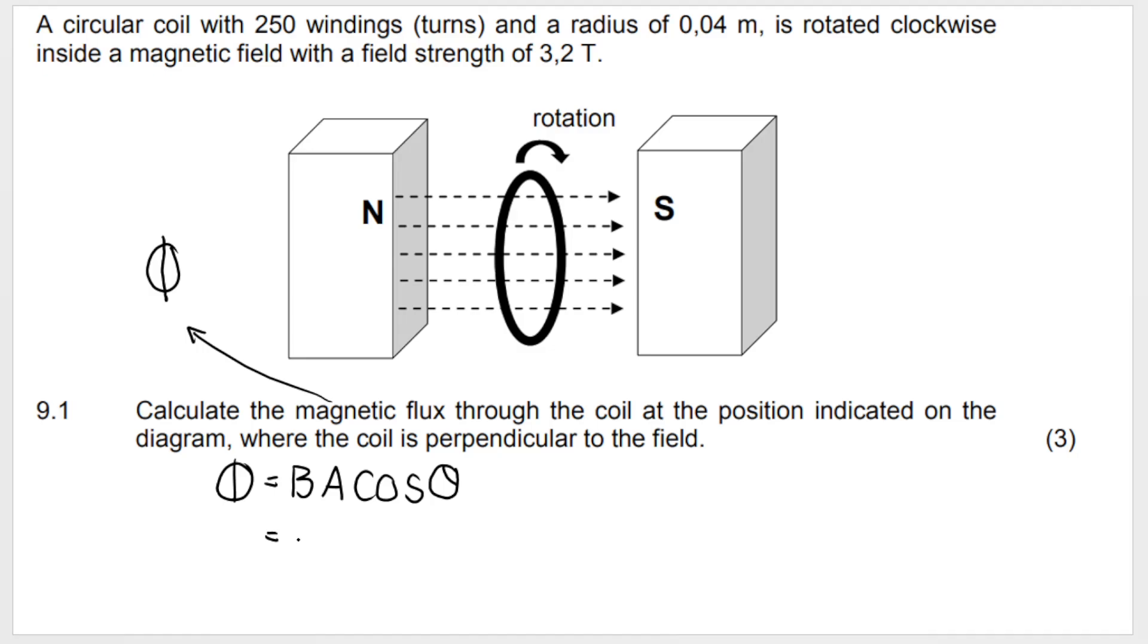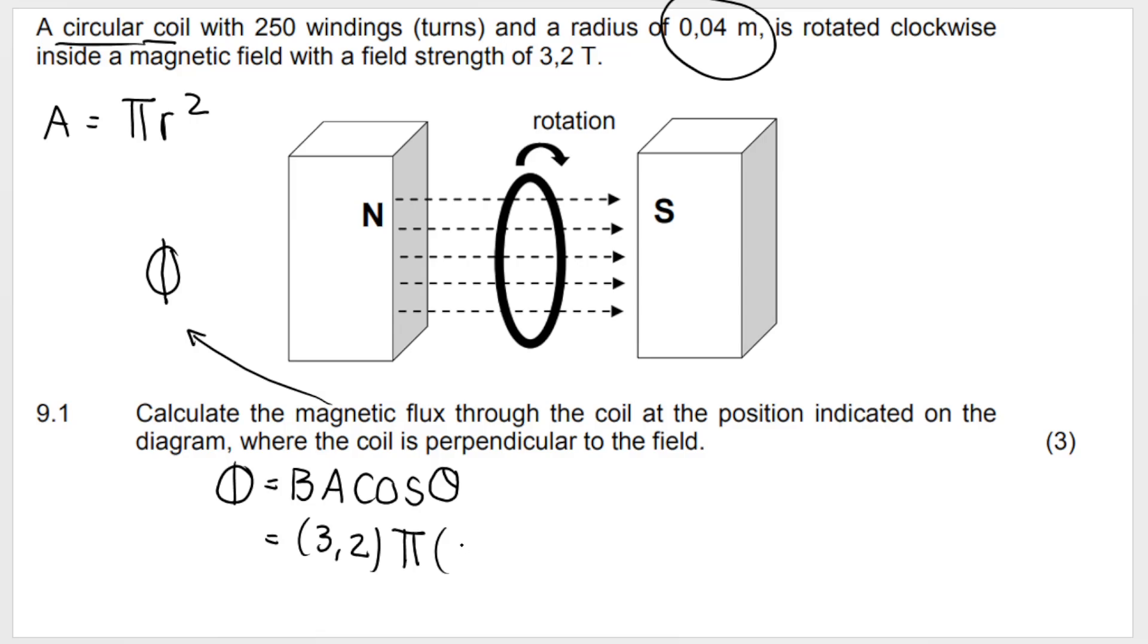We're calculating magnetic flux: φ = BA cos θ. B is magnetic field strength, which is 3.2. The area is the area of the coil, and we know it's a circle because they tell me, and they give the radius. The area of a circle is π r². So I'm going to substitute pi times 0.04 meters squared. It must be in meters because area must be in meters squared - that's very important.